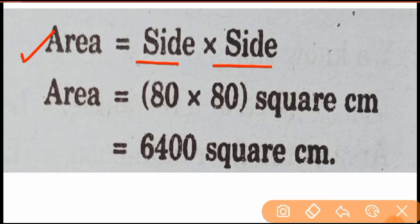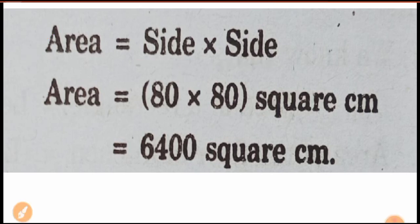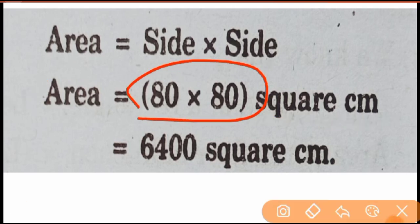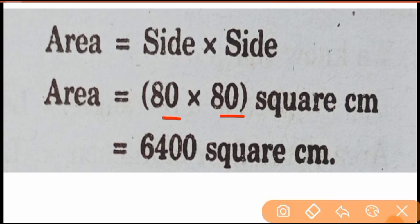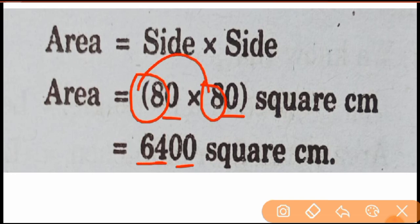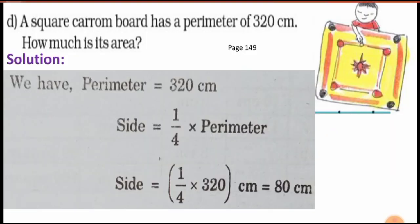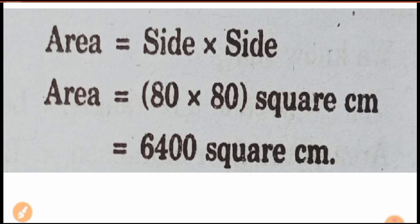We found the side as 80 cm. So area = 80 × 80. Multiply: 0 × 0 gives 0, carry the zeros, then 8 × 8 = 64. So the area is 6400 square centimeters. That is the area of the square carom board. Two steps: first find the side from the perimeter, then find the area.